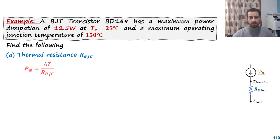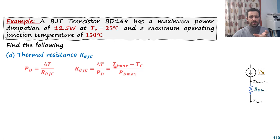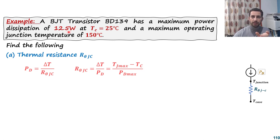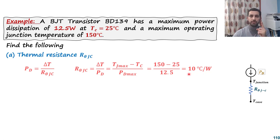The power dissipation is always the cause of the temperature difference, divided by the resistance. With just two points — junction and case — this becomes R_θJC = (T_junction − T_case) / P_dissipation. The maximum junction temperature is 150°C, the case temperature is 25°C, and the maximum power dissipation is 12.5 W, giving a thermal resistance of 10°C/W. So for every watt dissipated, the temperature increases by 10°C.